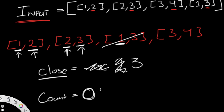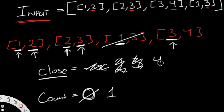We ignore [1,3] and increment count to 1 because its opening value is less than the current closing value. Then for the last element [3,4], the opening value 3 equals `close` of 3, so it's valid — our new closing value becomes 4. We've now iterated through all intervals and we return a count of 1.